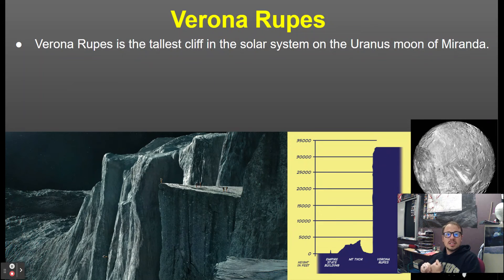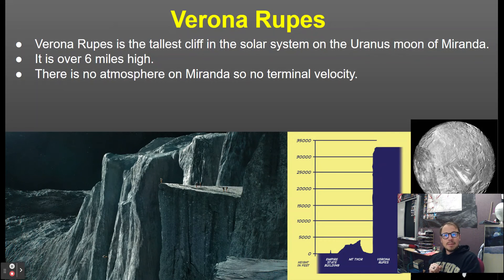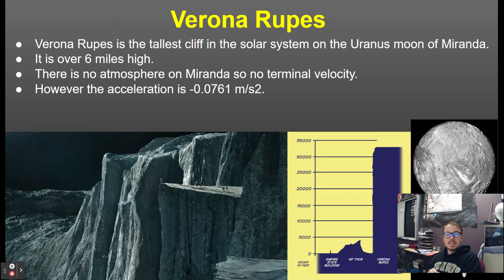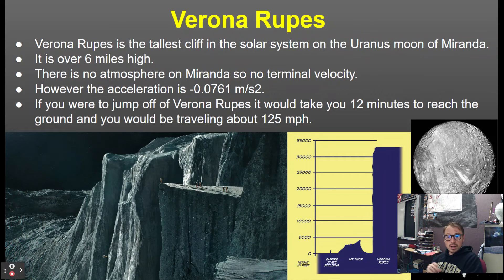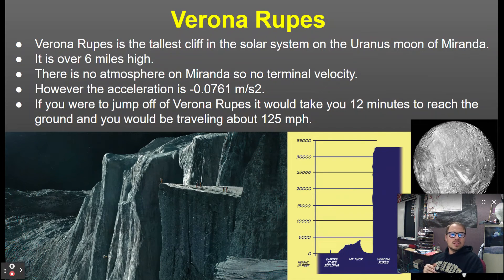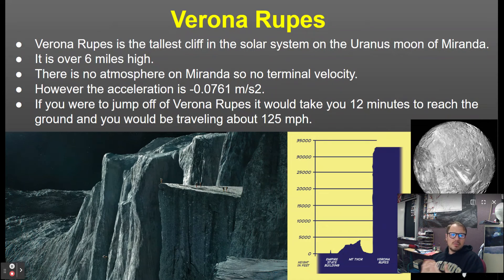Verona Rupes is the tallest cliff in our solar system, located on Miranda, the moon of Uranus. It's over six miles high, there is no atmosphere on Miranda so there's no terminal velocity, and the acceleration is negative 0.0761 meters per second squared. If you were to jump off Verona Rupes, it would take about 12 minutes to reach the ground and you'd be traveling about 125 miles per hour — it would be quite a ride.